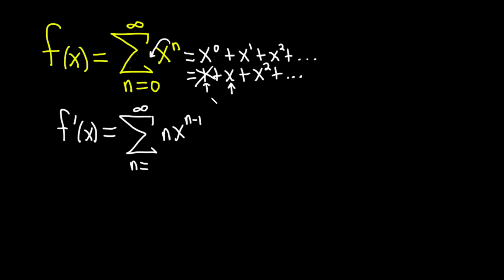Because the 0th term, right, this is the term that corresponds to 0. This is the term that corresponds to 1. This is the term that corresponds to 2. The 0th term vanishes, literally, right? 1 becomes 0. It's gone. So now we have to start this with 1.